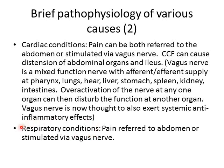Respiratory conditions such as a pulmonary embolus, pneumonia, pleural effusion, or TB can cause pain in the abdomen, and often also nausea and vomiting. The mechanisms are similar to cardiac conditions: either referred pain or activation of the vagus nerve.